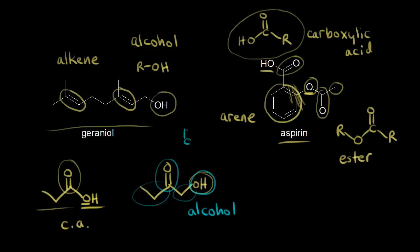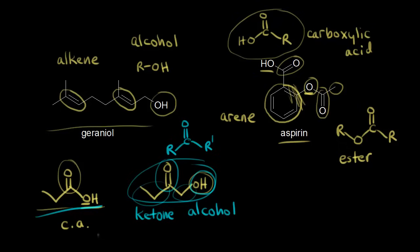When you have a carbonyl with an R group on one side and an R group on the other side — they could be the same or different R groups — that is a ketone. So now we have a ketone and an alcohol: two functional groups in the same compound. This compound is a carboxylic acid, while this one is a ketone and an alcohol.